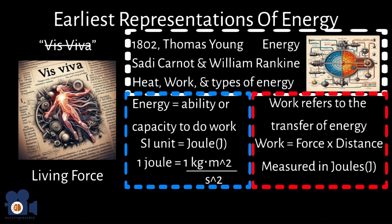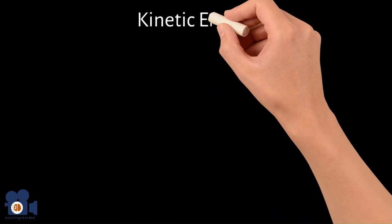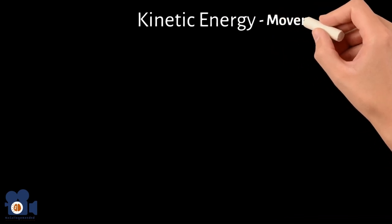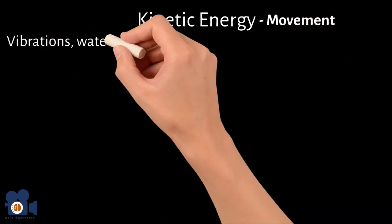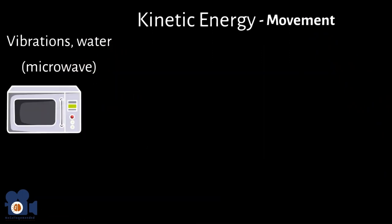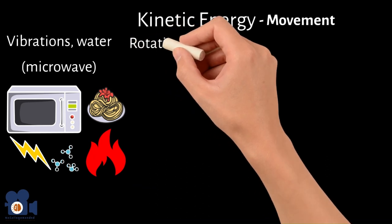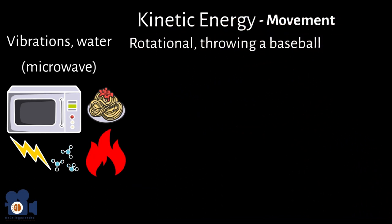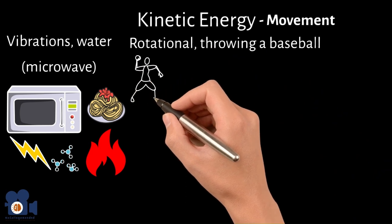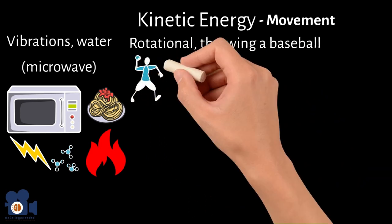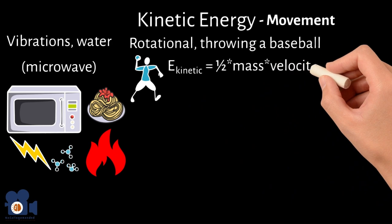The transfer of energy through work can come from either kinetic energy or potential energy. The easiest way to remember kinetic energy is by associating kinetic with movement. This movement can be from vibrations — such as when you heat food in a microwave, the water molecules absorb the microwaves and begin to vibrate, which is converted to thermal energy — or from rotational movement, like a baseball being thrown. We measure kinetic energy with the equation E_kinetic equals one-half mass times velocity squared.